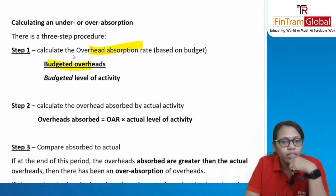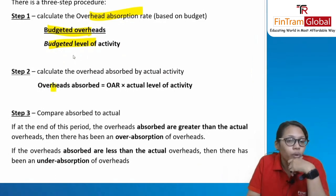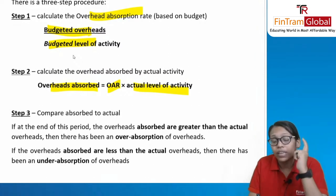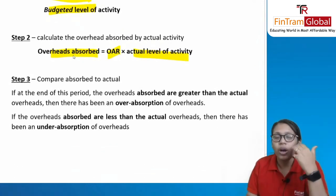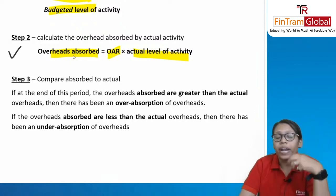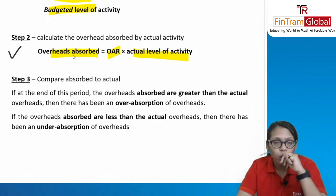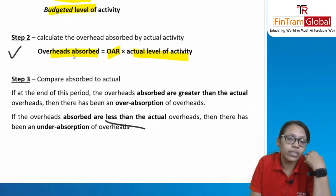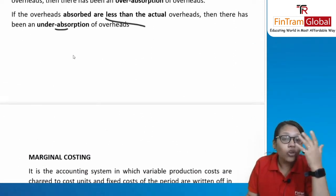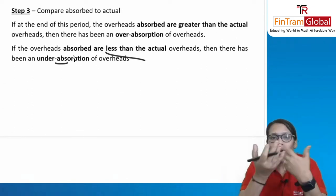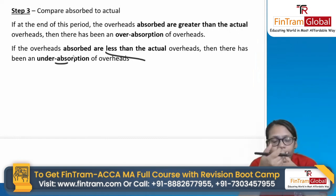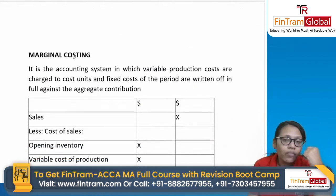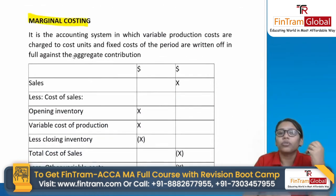Steps to calculate: (1) OAR = budgeted overheads ÷ budgeted activity level; (2) absorbed overhead = OAR × actual activity level; (3) compare absorbed vs. actual overhead. Over absorption = absorbed > actual; under absorption = absorbed < actual. For over absorption, subtract the amount from cost. For under absorption, use a supplementary rate — add to cost of sales and to closing stock.